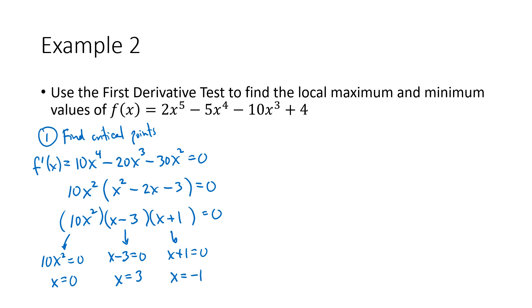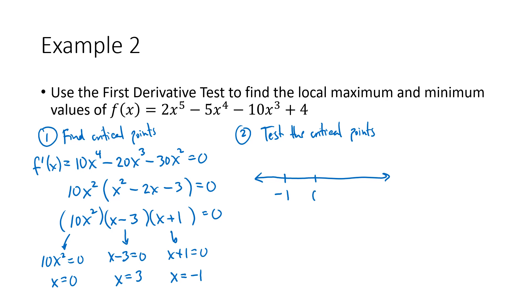Now we test all three critical points. We draw a number line and put our critical points in order: negative one, then zero, then three. In between all of these numbers I'm going to pick values of x and plug them into f prime, because I'm trying to figure out what's happening with the derivative.